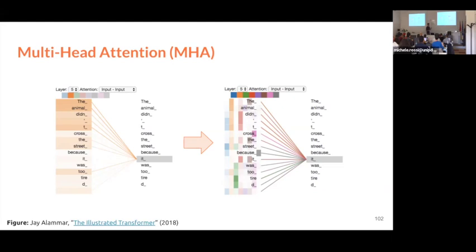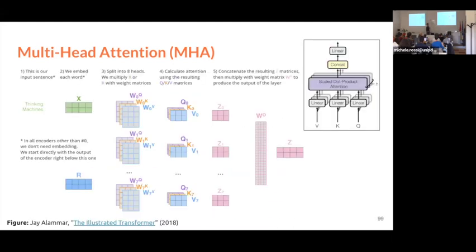How is multi-head attention implemented? Before, we had a single projection for queries, keys, and values. Now we have different projections for every head. We generate separate Q, K, V triplets for each head. The network learns how to generate these queries, keys, and values in different ways to find different connections between words.